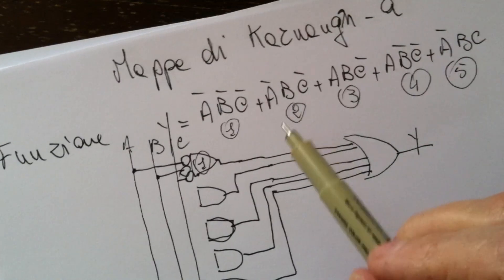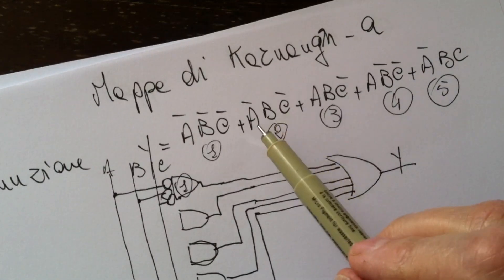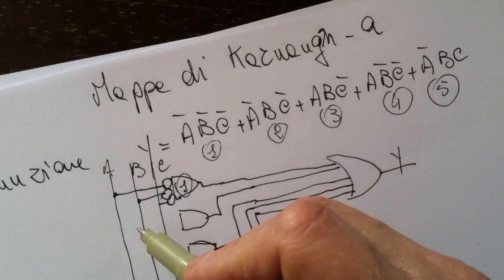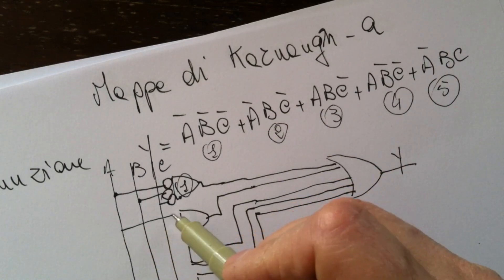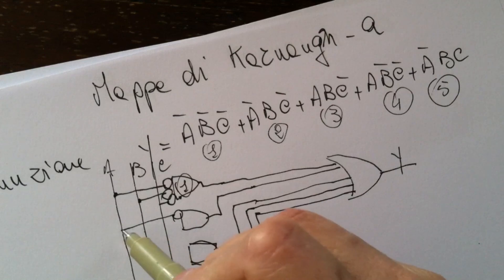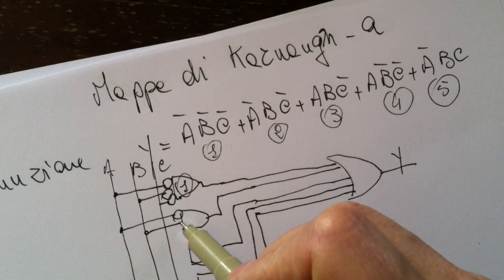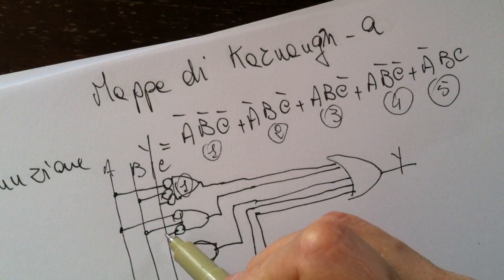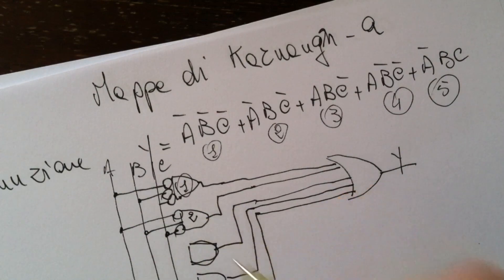Then we have NOT A, NOT C — and this is the second AND port.